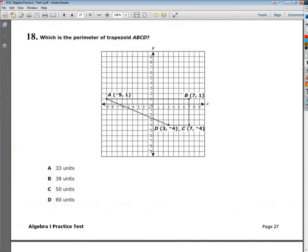Welcome, this is the Algebra 1 End of Course Practice Test, number 3, question number 18. What is the perimeter of the trapezoid A, B, C, D?